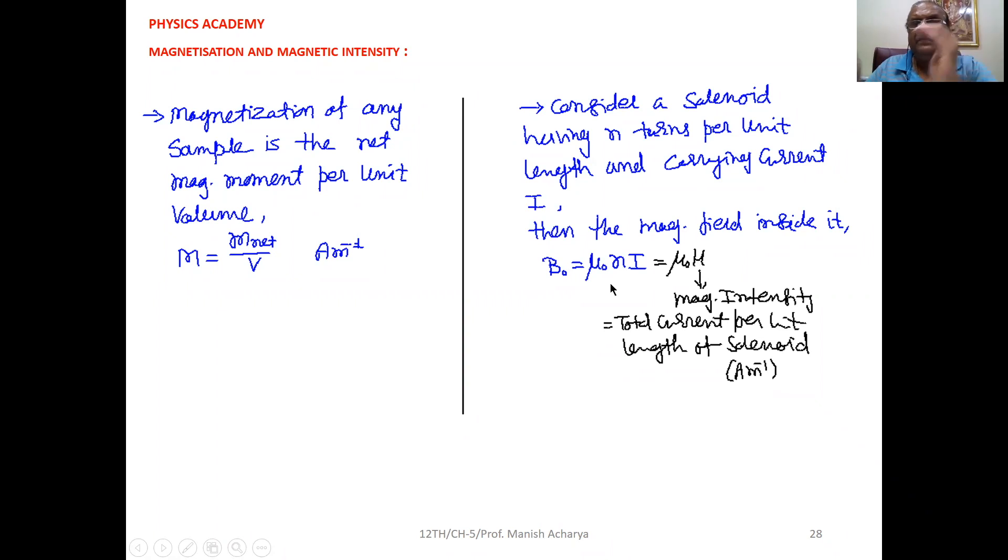It implies that inside the solenoid, if the core part is free space or air, then the magnetic field, that is Mu0 into H, where Mu0 is the permeability of that core part, which is the free space. Clear to all of you?